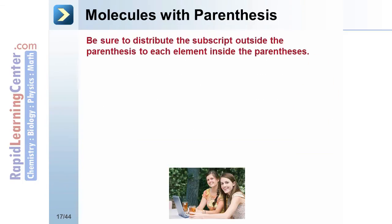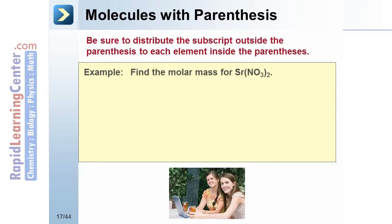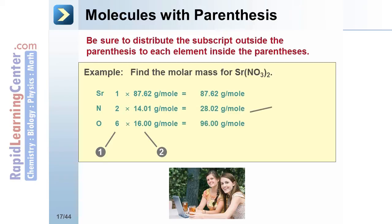When adding the number of atoms for a molecule with parentheses, don't forget to distribute the outside subscript to each of the inside atoms. For example, strontium nitrate. There is one strontium atom. There are two nitrogen atoms. And there are six oxygen atoms. The mass of each is found from the periodic table. The sum of all the parts is the sum of the mass of the entire molecule.